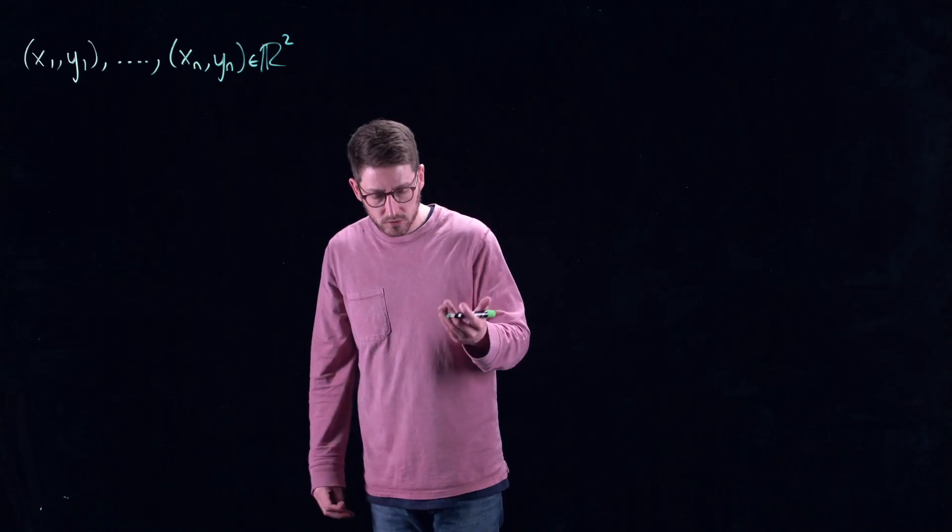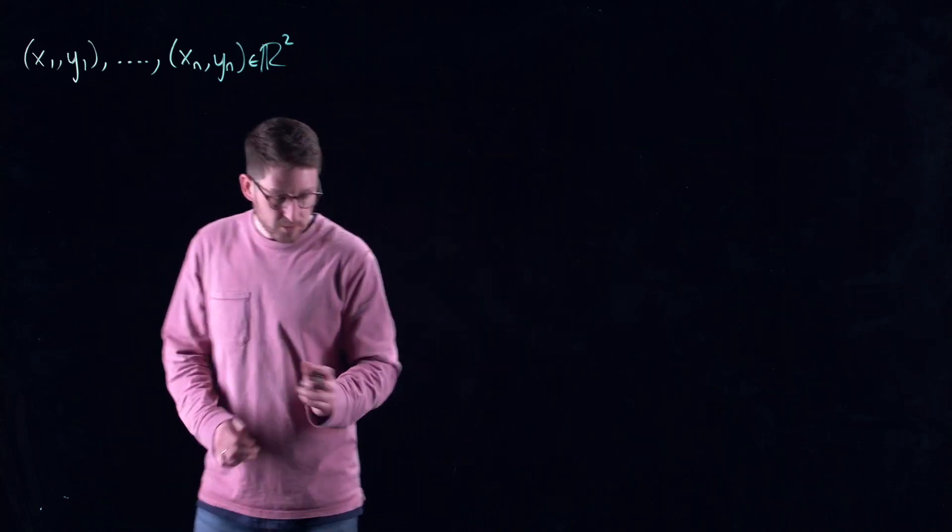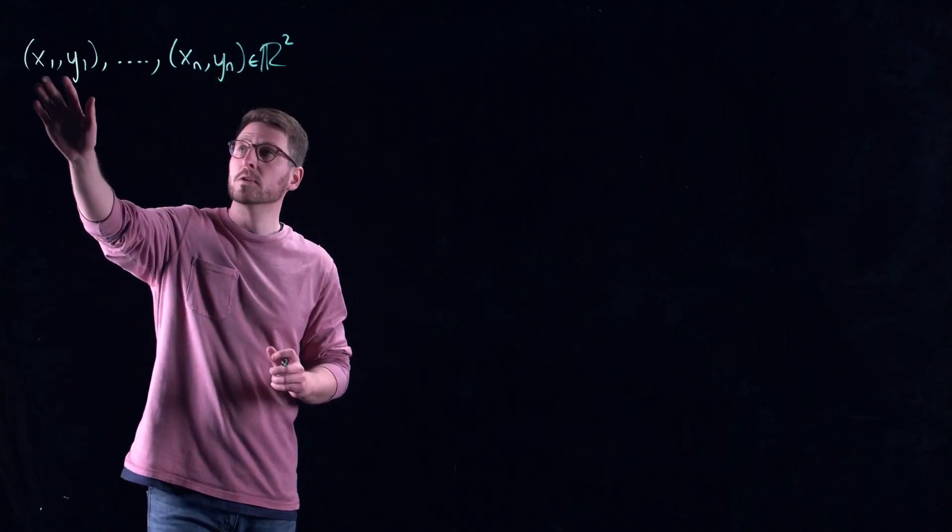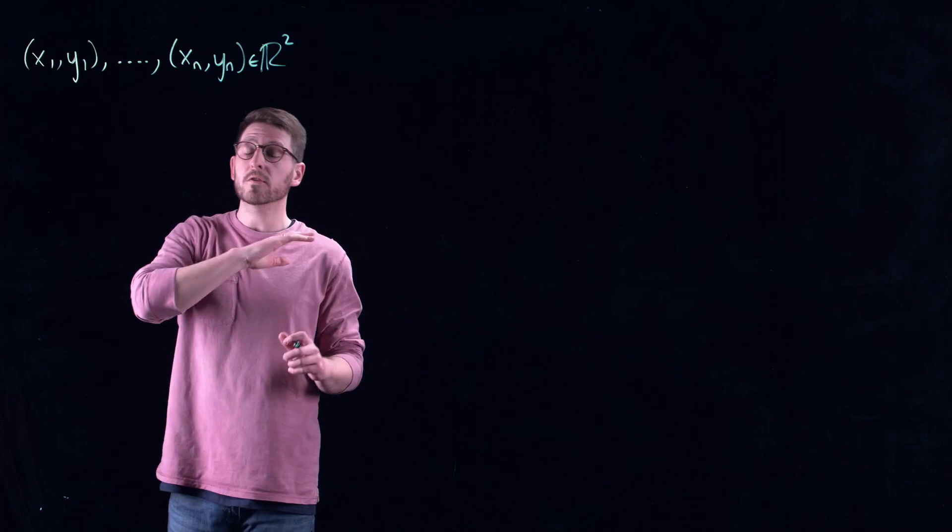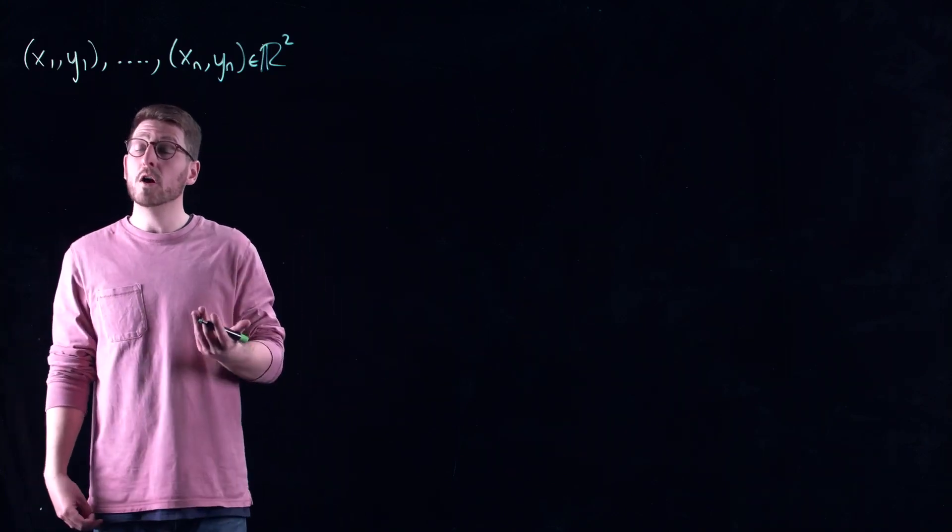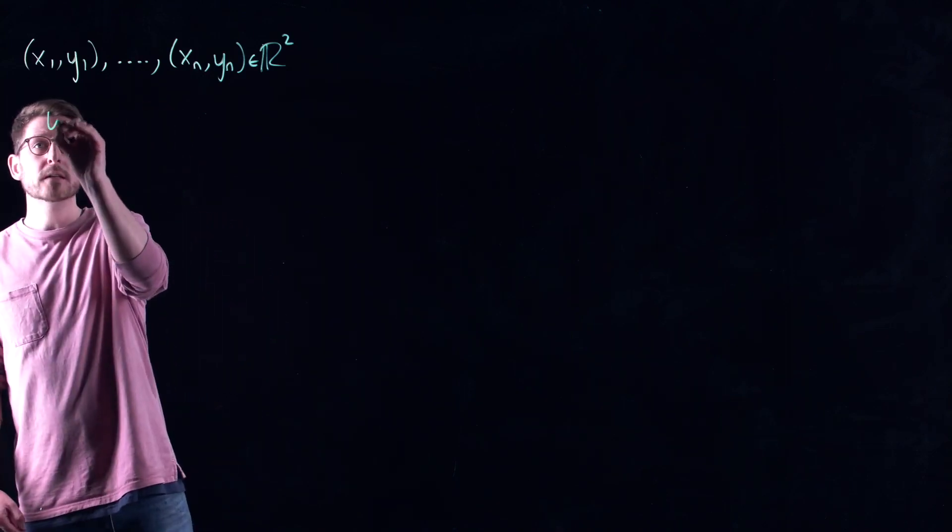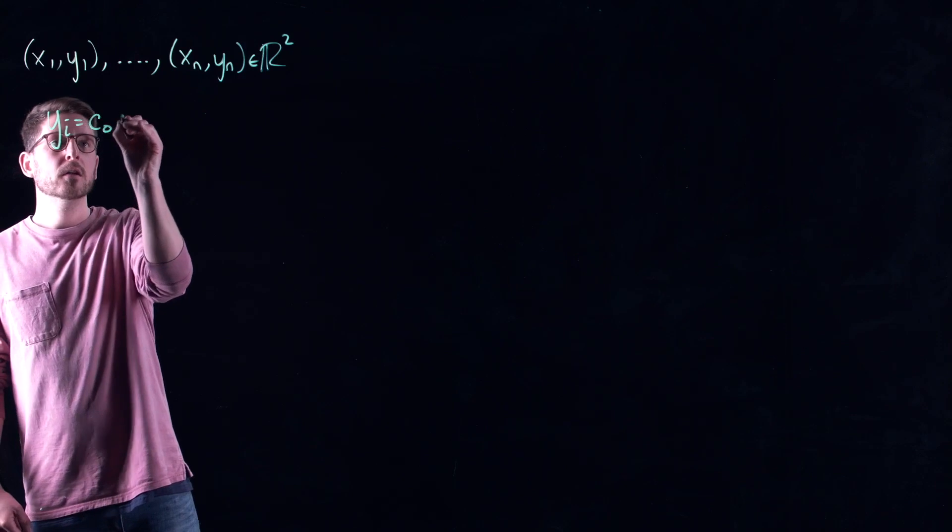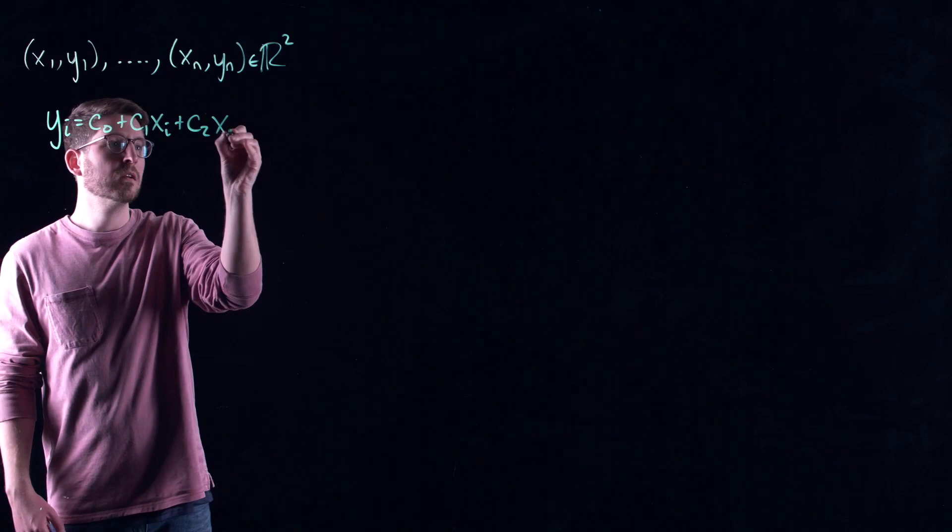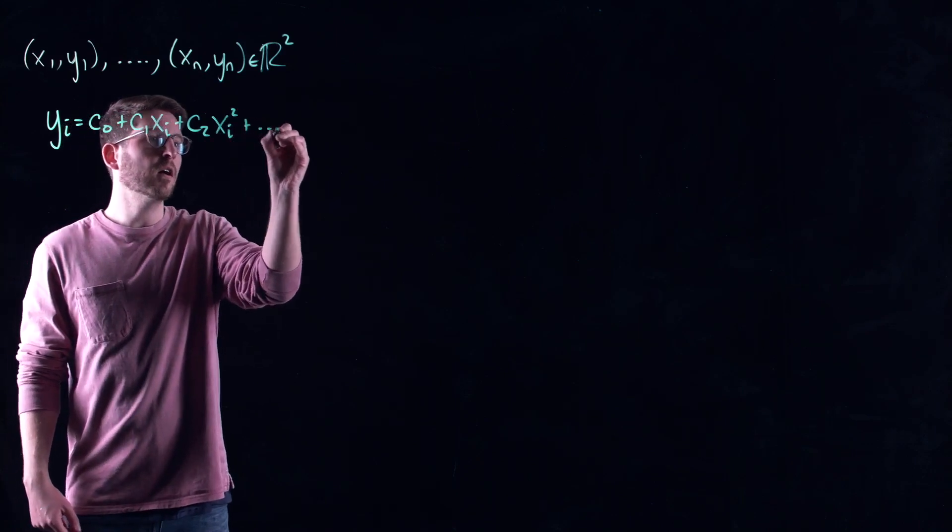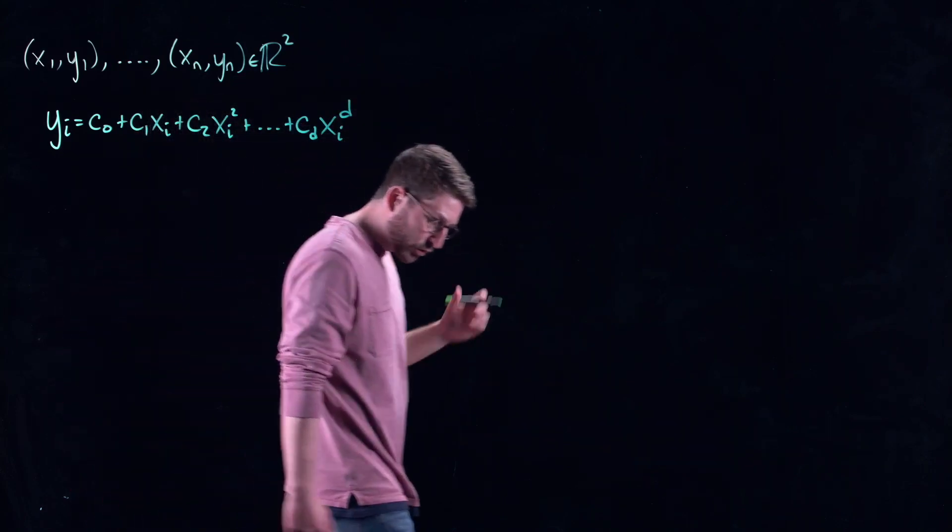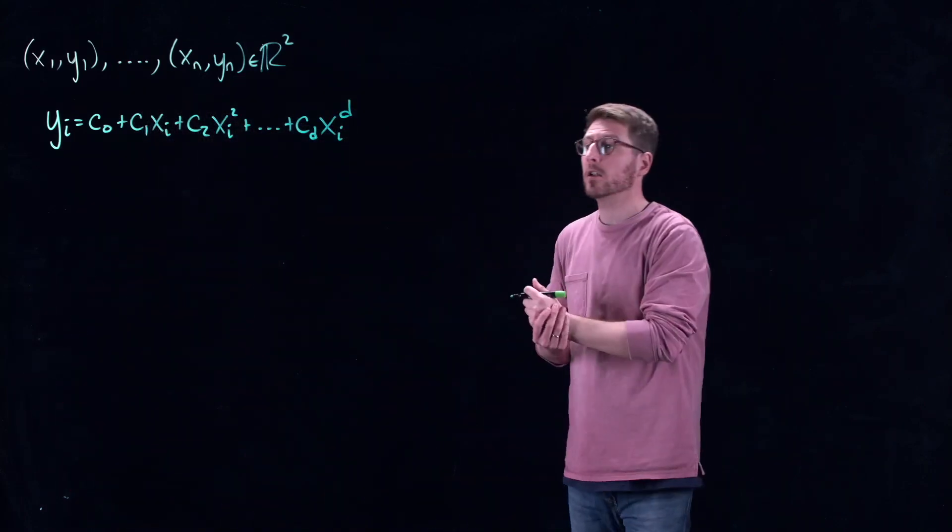So the idea here is instead of looking for a linear relationship between x and y, we'd like to look for a non-linear relationship. And in particular, maybe we want to fit to a polynomial. So for example, let's try and find a polynomial that can do this, squared all the way up to some polynomial degree. I'm going to call D for degree. So you get to choose what the polynomial degree is.